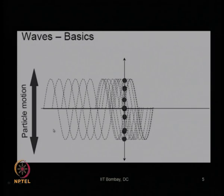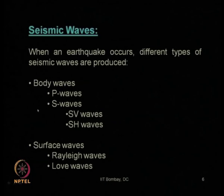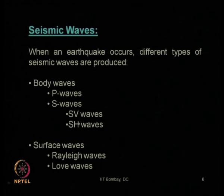We had also talked about the various types of seismic waves — that is, when the excitation is due to the release of earthquake energy. There are two major types: body waves and surface waves. Within body waves, we have primary waves and shear waves. Within shear waves, there are two categories: SV wave and SH wave, depending on the direction of movement of the particles with respect to the direction of wave propagation. For surface waves, the sub-classifications are Rayleigh wave and Love wave.